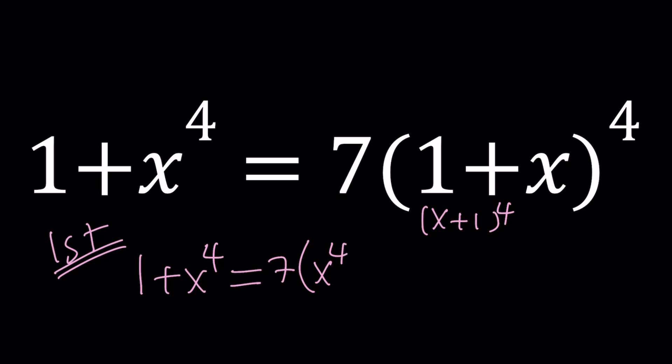That's going to give me x to the 4th plus 4x cubed plus 6x squared plus 4x plus 1. If you're doing it the 1 plus x way, then you would have everything reversed. You would start with 1, and then you would have 4x, so on and so forth. Make sense? Great.